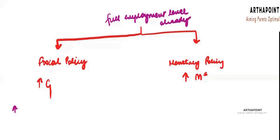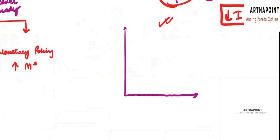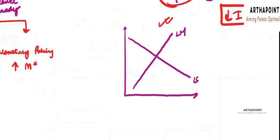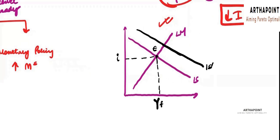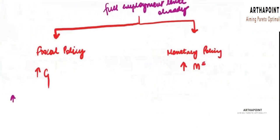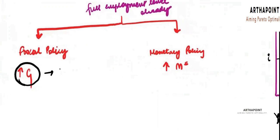So, what happened is that when your IS and LM were meeting, they were meeting here at this interest rate, and you were already at your equilibrium level of output. Now, when there was an increase in G, your IS shifted to the right. Ideally, your output increased, and people were demanding more output than was available in the market, so prices started increasing. This increase in G caused an increase in the price level.